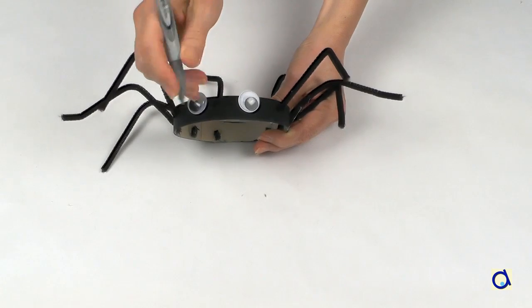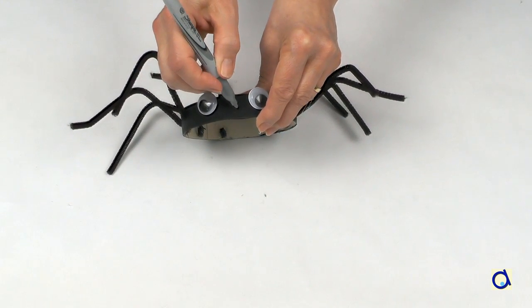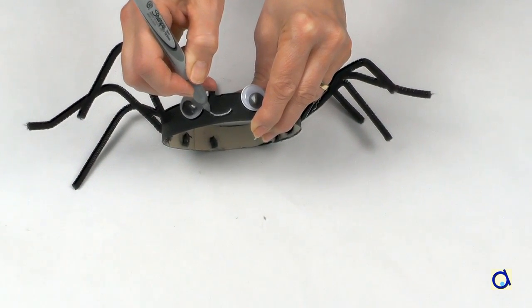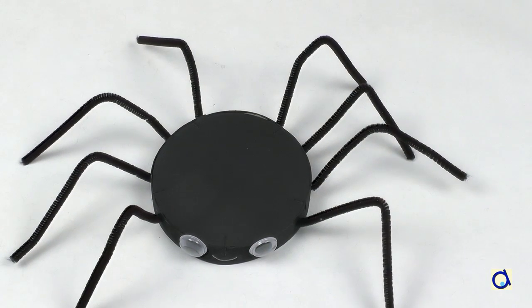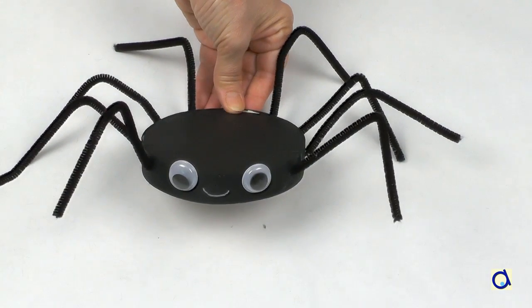Draw a mouth between the eyes. As I did not want a terrifying spider, I gave it a smile. I used the silver marker for the mouth to make it easy to see on the black paint. I could also have painted a mouth with white paint and a brush.